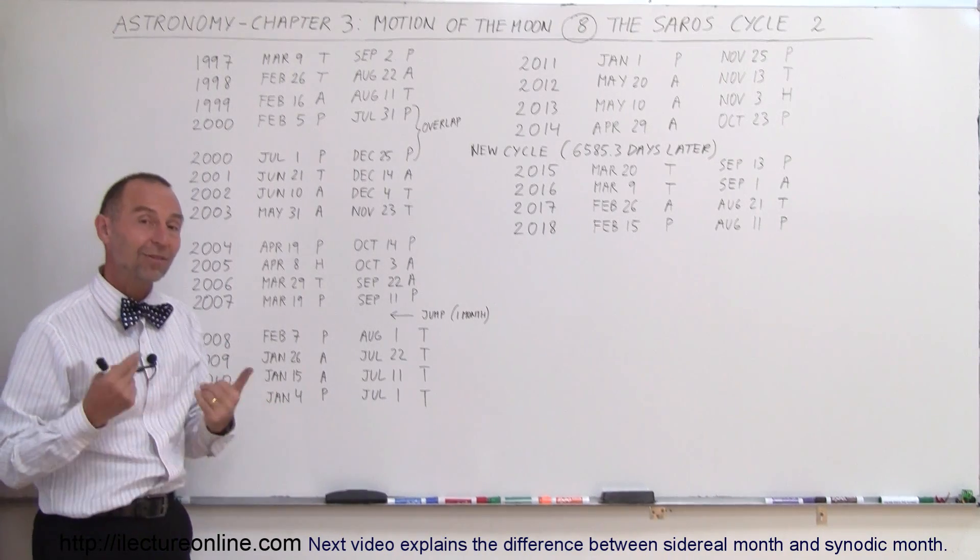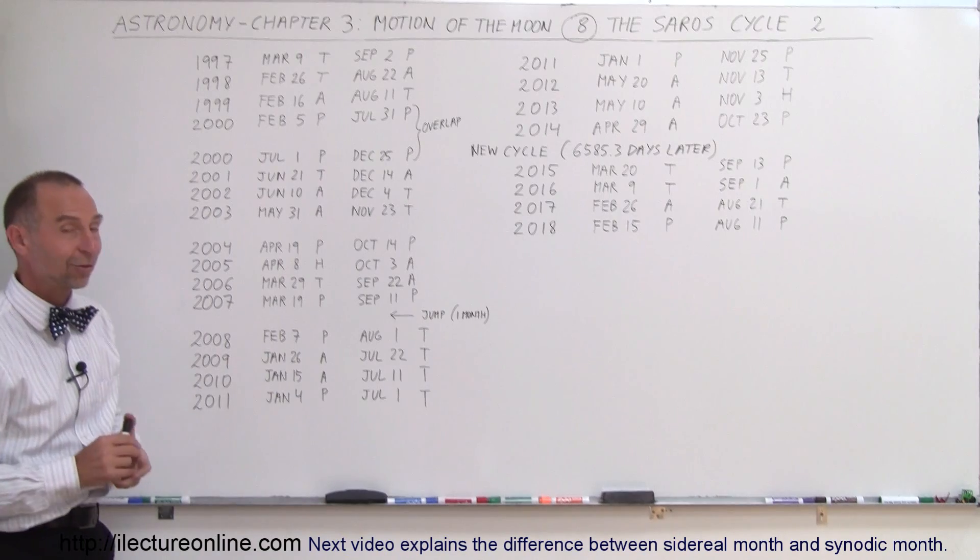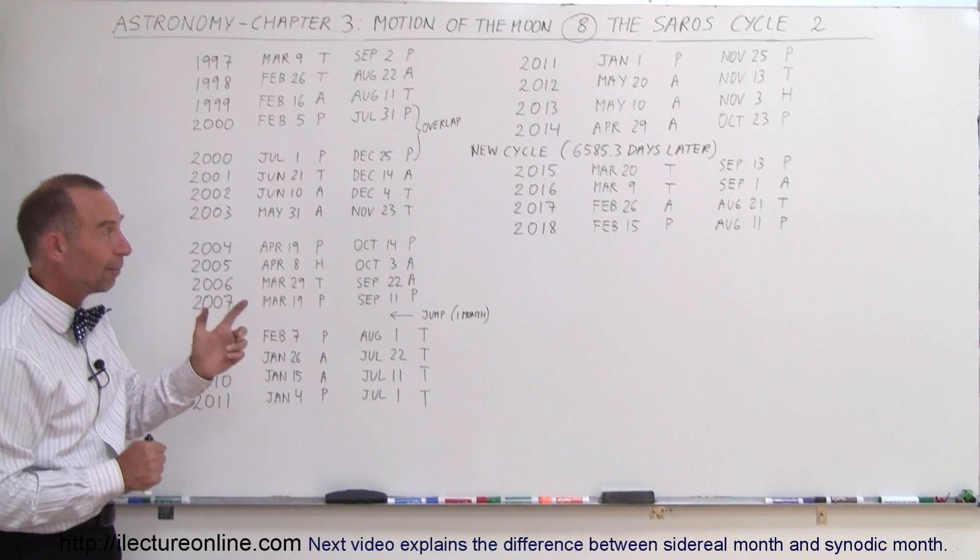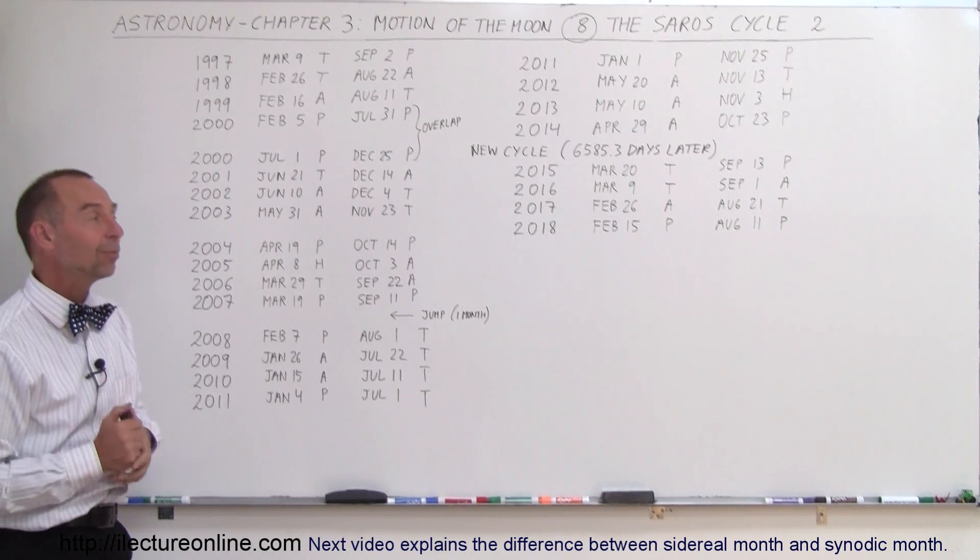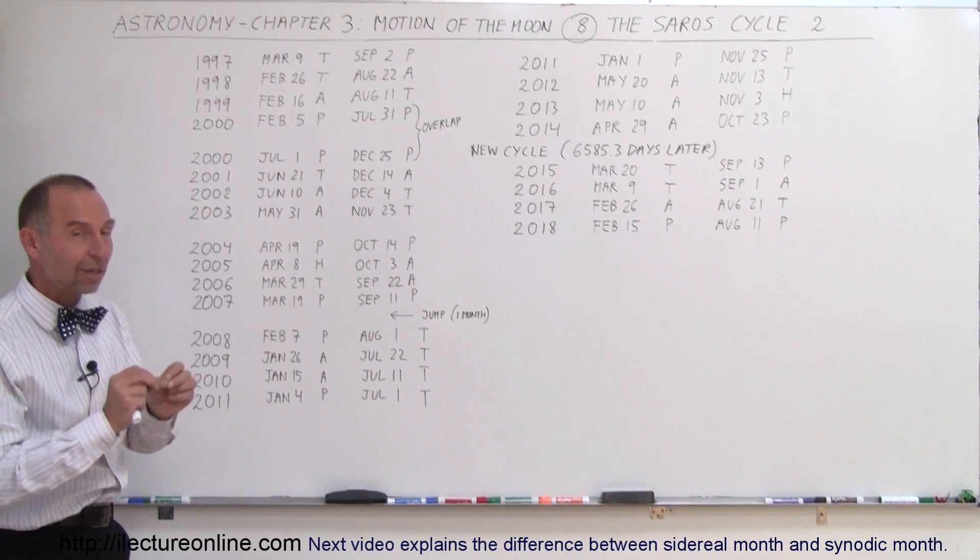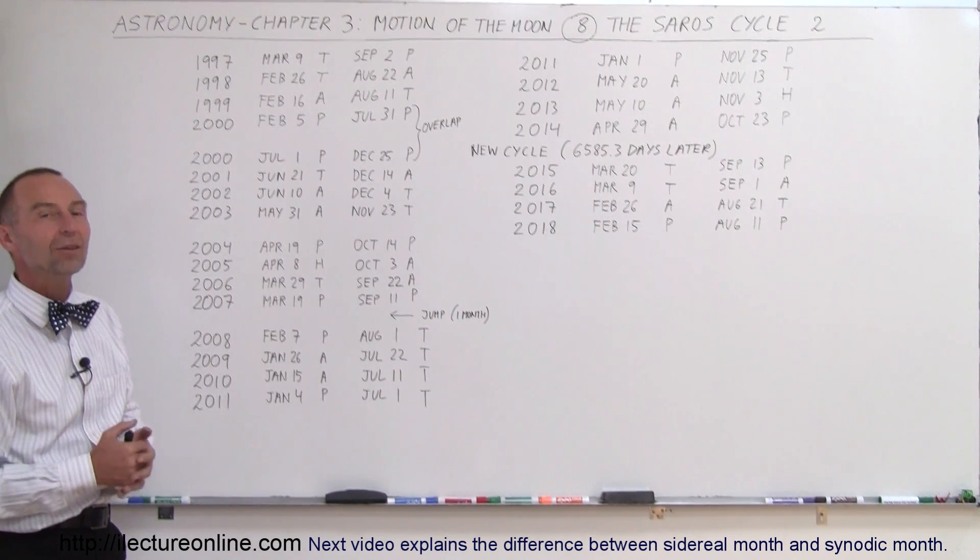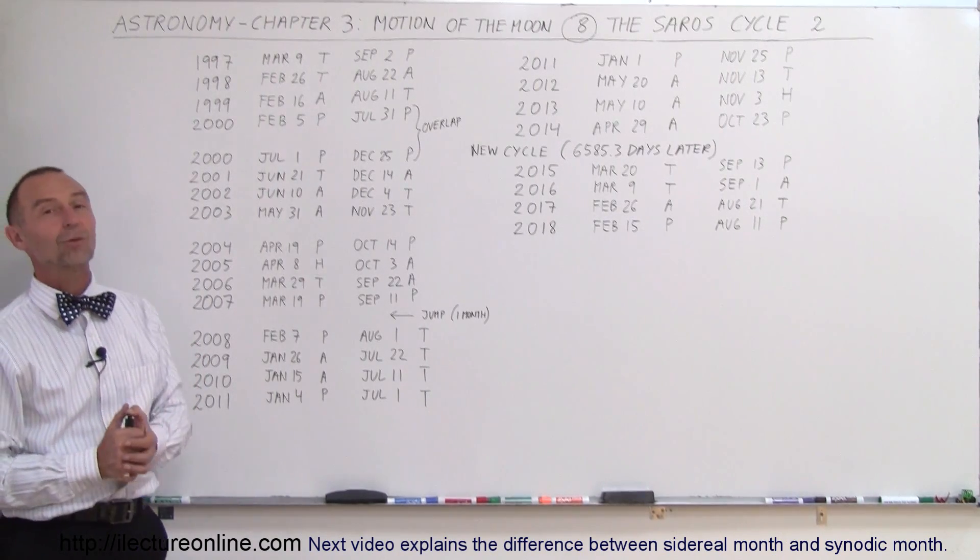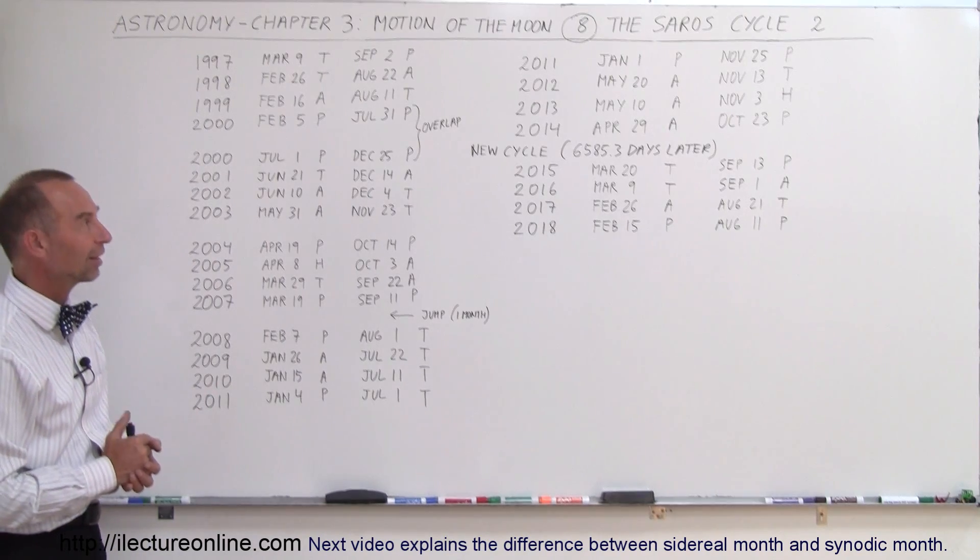But now that we have, we have the benefit of knowing when the next solar eclipse is going to occur, what date, what type of eclipse is going to be, and if we work everything out in detail, almost down to the minute, we can figure out when the next solar eclipse is going to happen. So that's pretty amazing that they've done that.